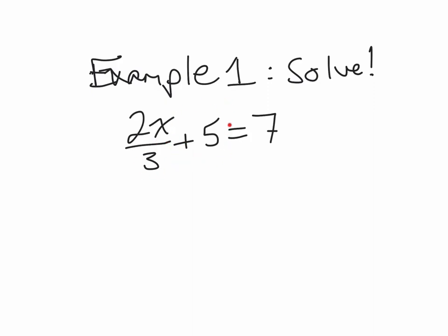So it makes it nice and easy to move this over to the other side of the equation first. So I'm going to move that over to start with to kind of simplify things. So I'm going to subtract 5 and subtract 5. 5 minus 5 gives me 0, and 7 minus 5 is 2. So I'm left with 2x over 3 equals 2.